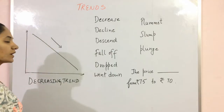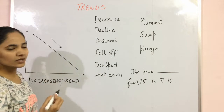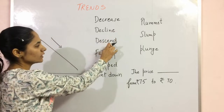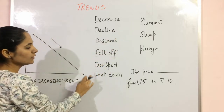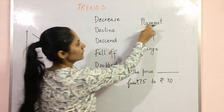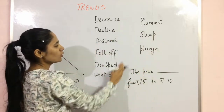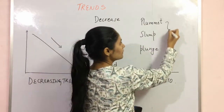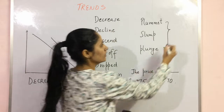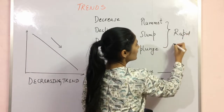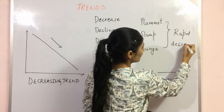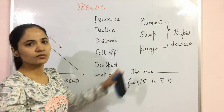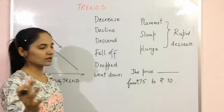The next trend is the decreasing trend. When there is a decrease, we can use: decrease, decline, descent, fall off, drop, and went down. For a rapid decrease, we use: plummet, slump, and plunge. The general words are used for a moderate decrease, while plummet, slump, and plunge are used when there is a sudden and very large decrease.